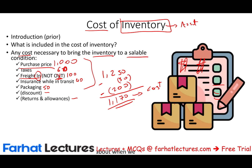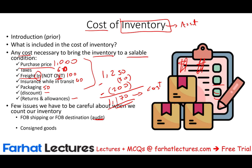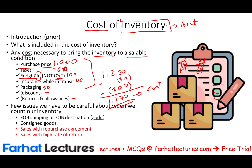Pretty straightforward. There are a few other topics we have to be careful about when we count inventory: FOB shipping or FOB destination. This topic is covered also in your audit course, because when you audit inventory you have to know the terms FOB shipping and FOB destination. You also need to know about consigned goods, sales with repurchase agreement, and sales with high rate of return. In this session, I'm going to focus on FOB shipping, FOB destination, and consigned goods — those are special situations where you have to be careful what to count in your inventory and what not to count.